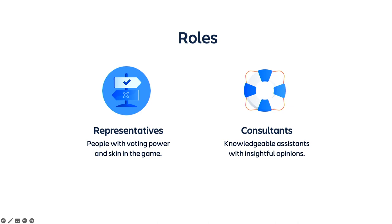Consultants, on the other hand, don't have voting power but are more knowledgeable — they have plenty of experience and insights to offer. A common pattern: representatives who didn't know everything about their organization would bring in one to three consultants to fill out their understanding. There would still be only one vote per organization. If a particularly loud consultant had opinions, they'd have to route it through the representative and get them on their side — they'd have to reconcile those differences.